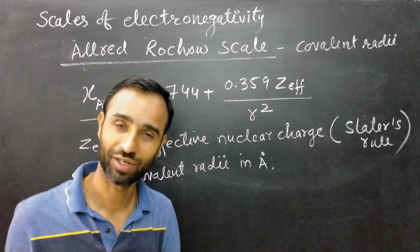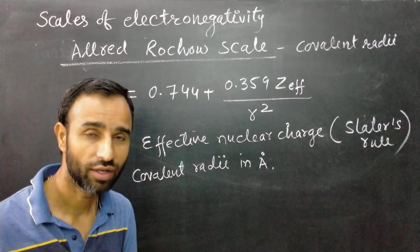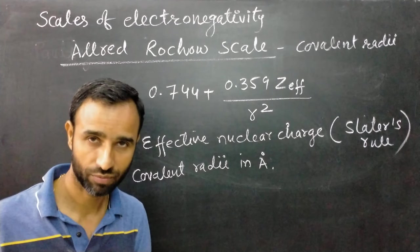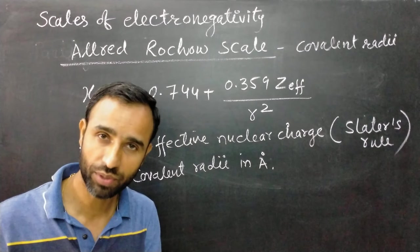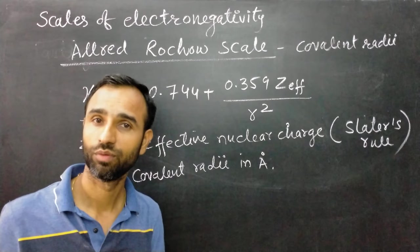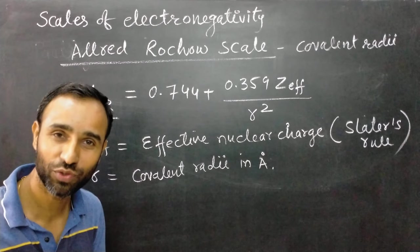These are the three scales of electronegativity. The first scale, Mulliken scale, is related to electron gain enthalpy and ionization enthalpy values. The second scale, Pauling scale, is related to bond enthalpies. The third, Allred-Rocco scale, is related to covalent radius. Thank you very much for watching this video. Do like, subscribe, and share my channel. God bless you all. Happy learning.